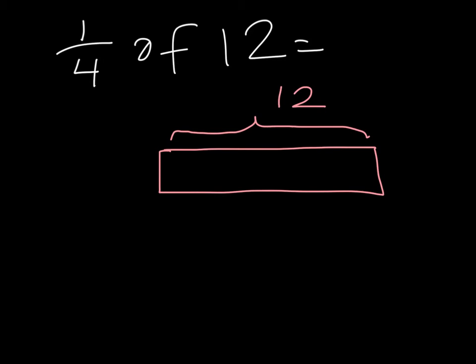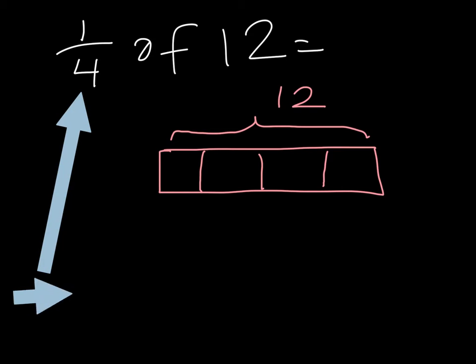You could start by dividing 12 by 4. Now ask yourself, why am I doing that? Because the denominator is telling me that there should be 4 equal parts that make up 12.